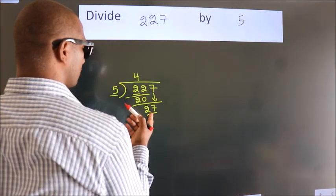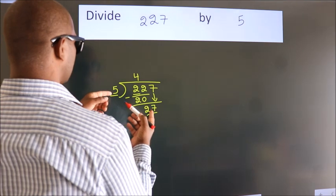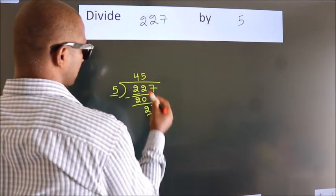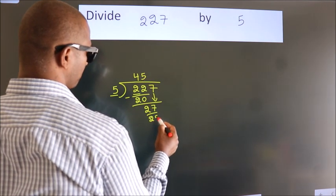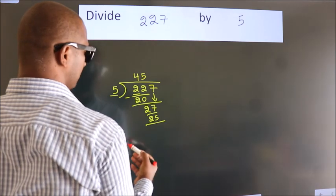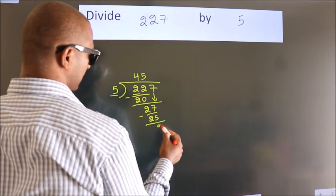A number close to 27 in the 5 table is 5 times 5, 25. Now we subtract. We get 2.